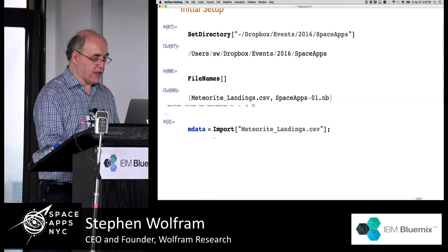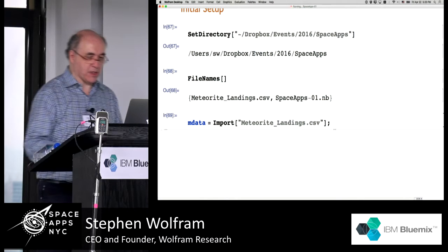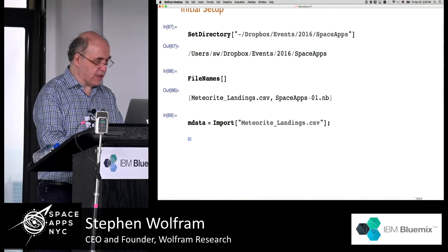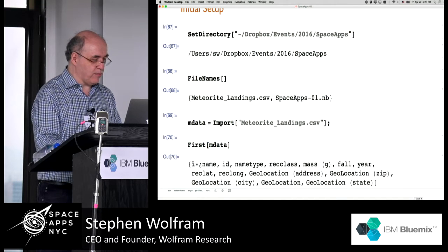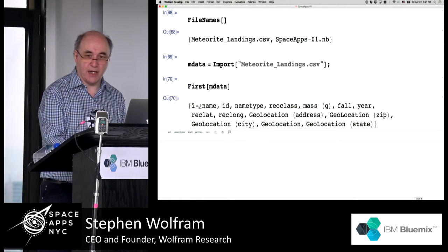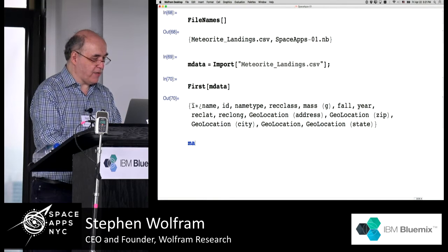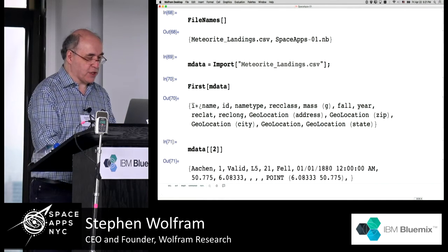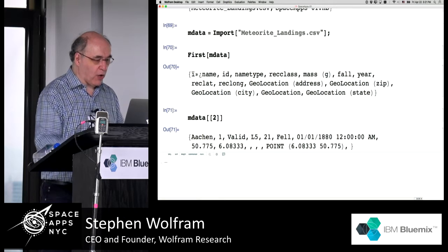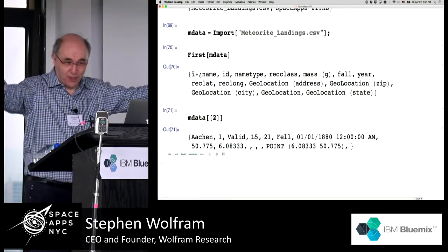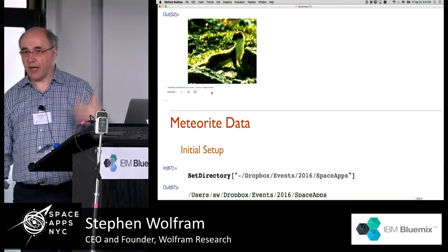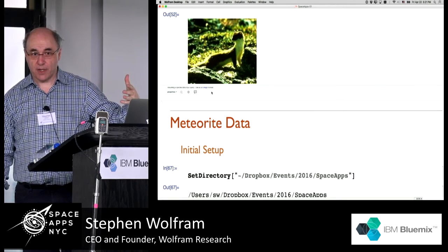Let me go ahead and import the data associated with the meteorite landings dataset. Now we're dealing with a jungle out there because this is just some random dataset. There's obviously some character encoding problem, but let's not worry about it. If I take the second element of this dataset, we get a bunch of things. Before I do this, before I launch into this, I've got another important thing I should show you: when you build something in this IDE interactively, how do you deploy it on the web?